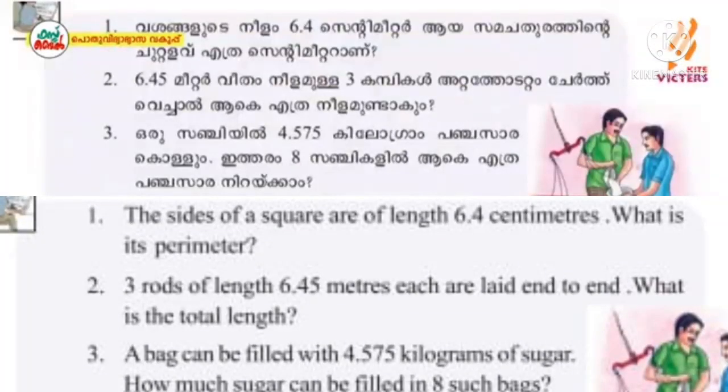The sides of a square are of length 6.4 cm. What is the perimeter? The perimeter is 4 times 6.4 cm. This is the perimeter — all four sides are 6.4 cm each. So each side of the perimeter is 6.4 cm. That is the perimeter.